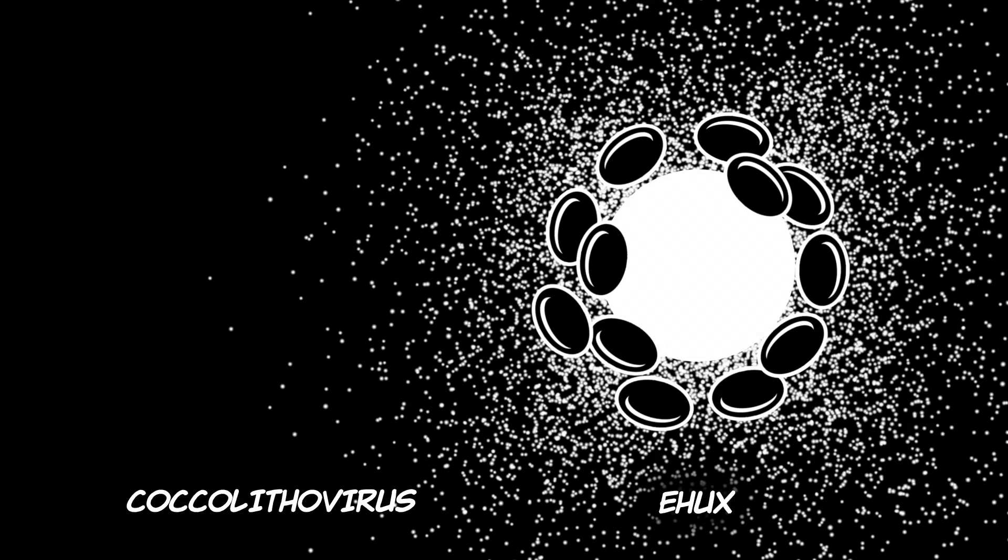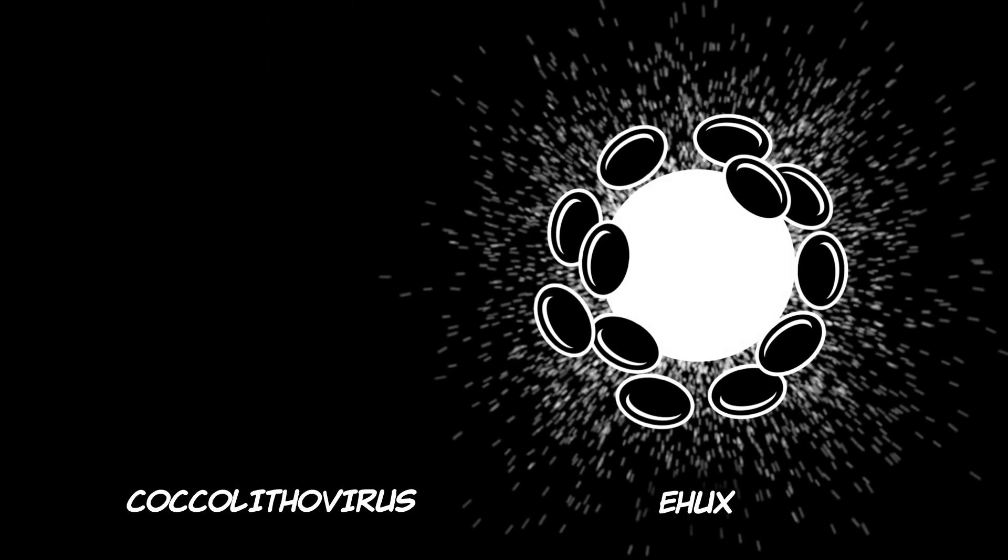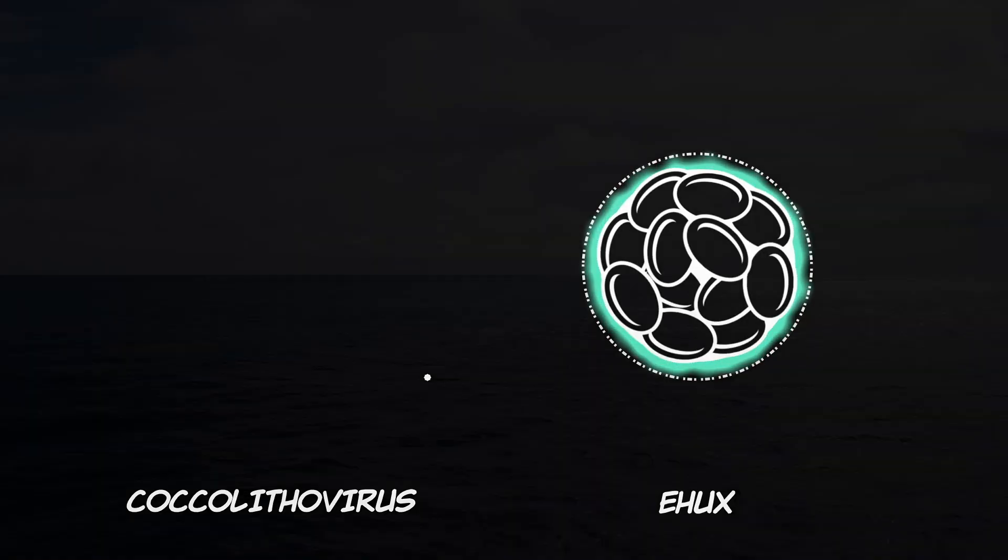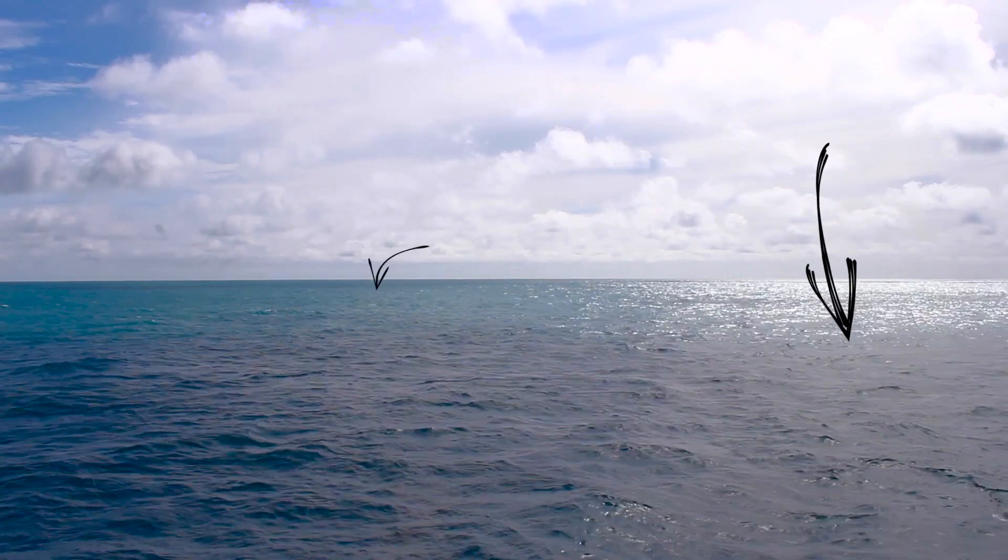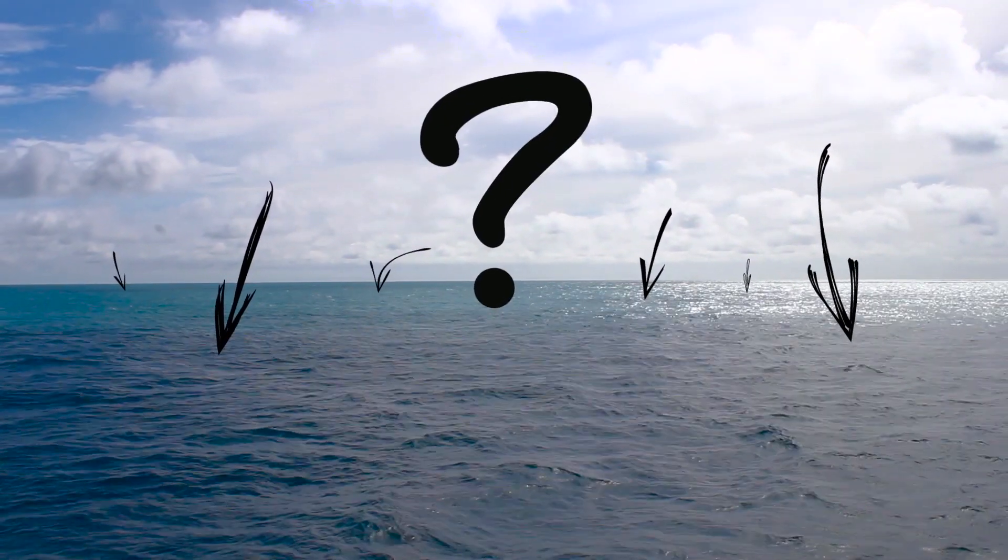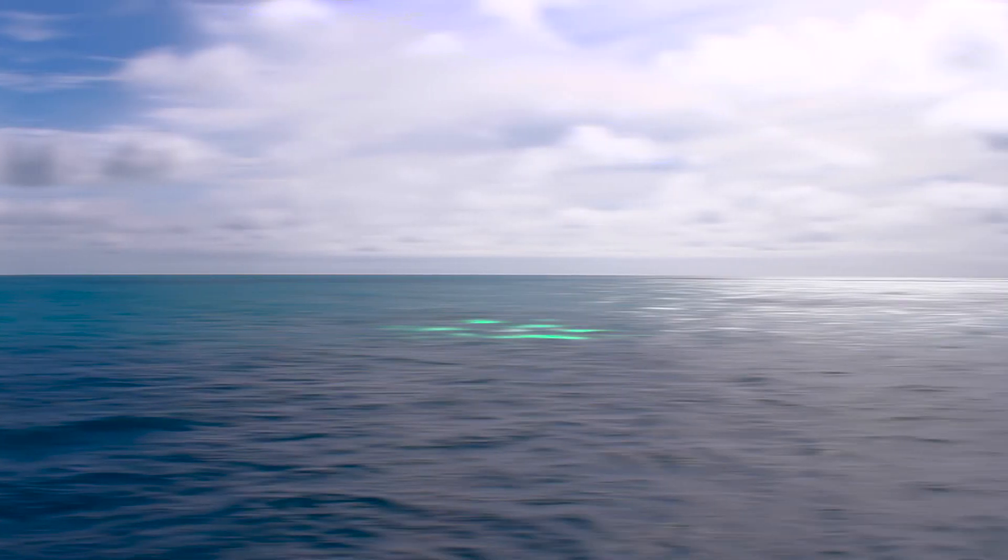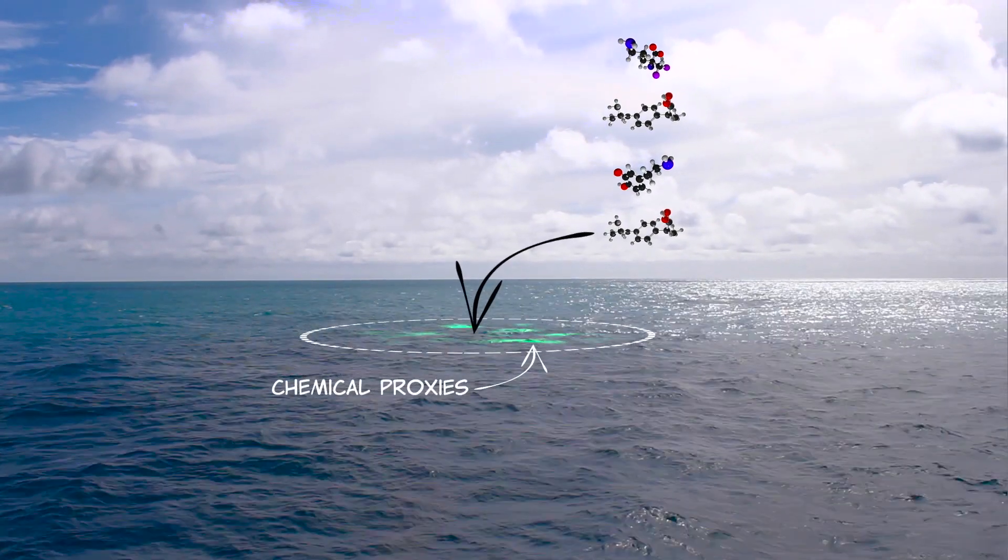Chemical proxies also help researchers understand how e-hux and its viruses are fighting it out on a cellular level. Because during this battle, chemicals get produced at various stages. Directly observing an actual infection play out in the open ocean is impossible. Again, because we're talking about the inner workings of a cell in a huge ocean. But we can look for chemicals as clues or tracers.